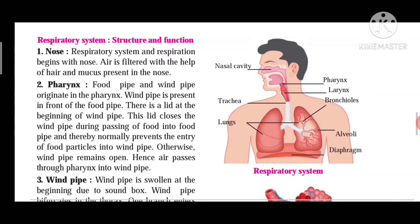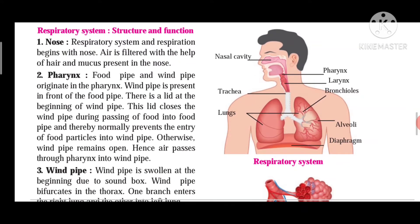Now let us look at the respiratory system — its structure and function. The respiratory system is the system where the process of respiration takes place. The required amount of oxygen is supplied to the cells for energy production through this process.